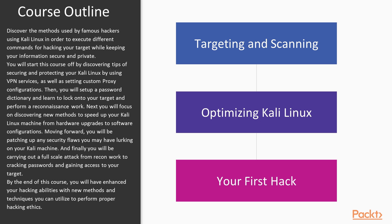Then you will set up a password dictionary and learn to lock onto your target and perform reconnaissance work. Next, you will focus on discovering new methods to speed up your Kali Linux machine, from hardware upgrades to software configuration. Moving forward, you will be patching up any security flaws lurking on your Kali Linux machine. And finally, you will carry out a full-scale attack from reconnaissance work to cracking passwords and gaining access to your target. By the end of this course, you will have enhanced your hacking abilities with new methods and techniques to perform proper hacking ethics.